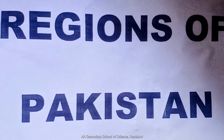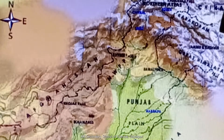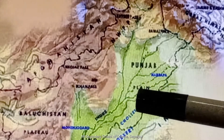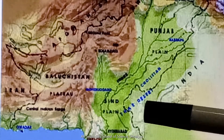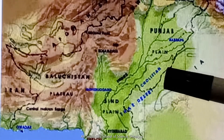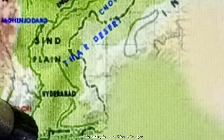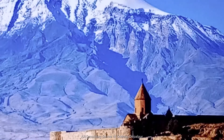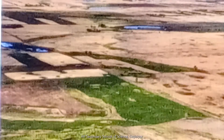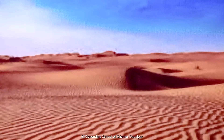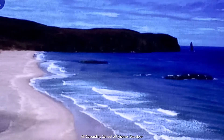Now we will discuss about the regions of Pakistan. Look at this map. Pakistan is divided into five main regions: mountains, plains, plateau, deserts, and coastal areas. There are two deserts mentioned — Thar Desert and Cholistan Desert. Repeat with me: mountains, plains, plateau, deserts, coastal areas.